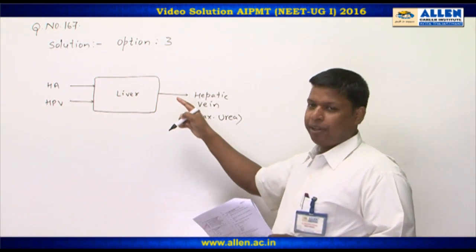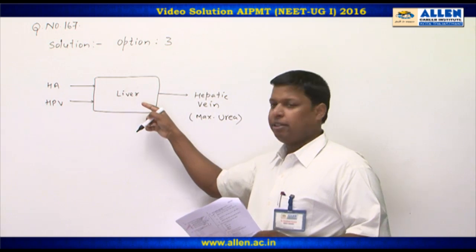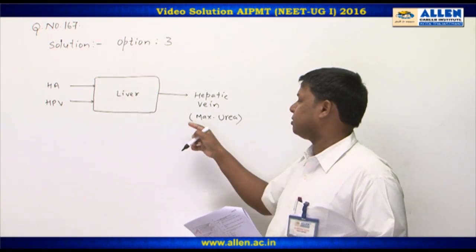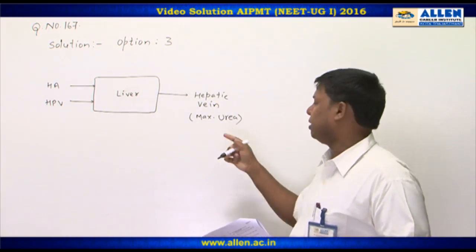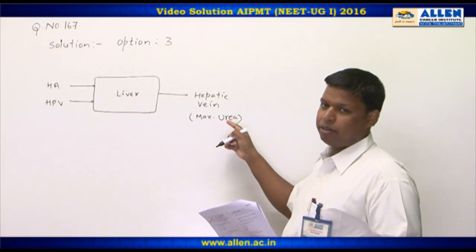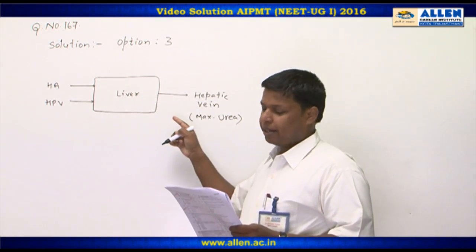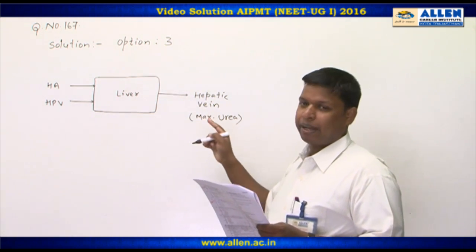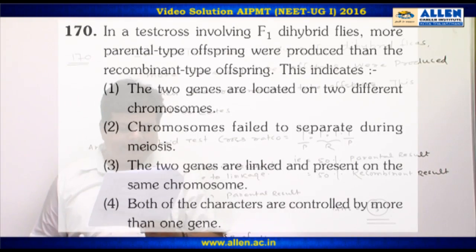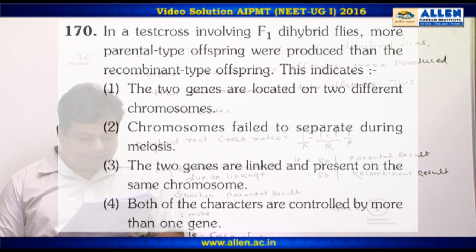Urea is synthesized in the liver. That is why when the hepatic vein drains blood out of the liver, it carries the maximum amount of urea. Therefore, the correct answer is option three — hepatic vein.